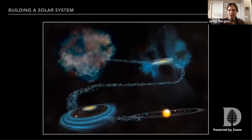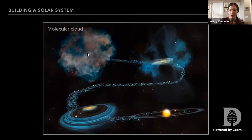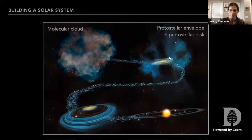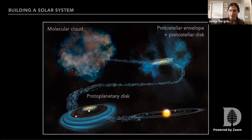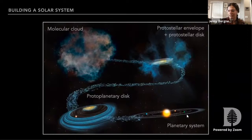We know that planet formation is a common outcome of the formation of low-mass stars similar to our own sun. This process begins in a molecular cloud, where an overdensity begins to collapse in on itself, forming a protostar. In the protostellar stage, you're accreting material through a protostellar disk from the protostellar envelope. Then in the protoplanetary disk stage, the envelope is cleared away, leaving a flattened disk-like structure still accreting onto the central star — this is really where much of the planet-formation process takes place. Ultimately, the excess disk material is swept away, leaving the isolated planetary system.